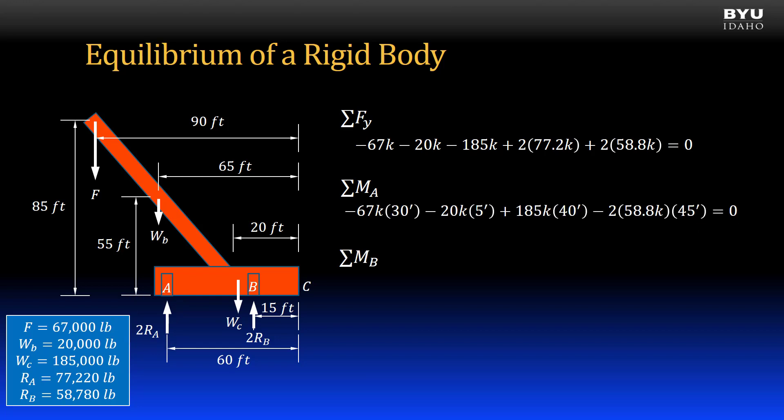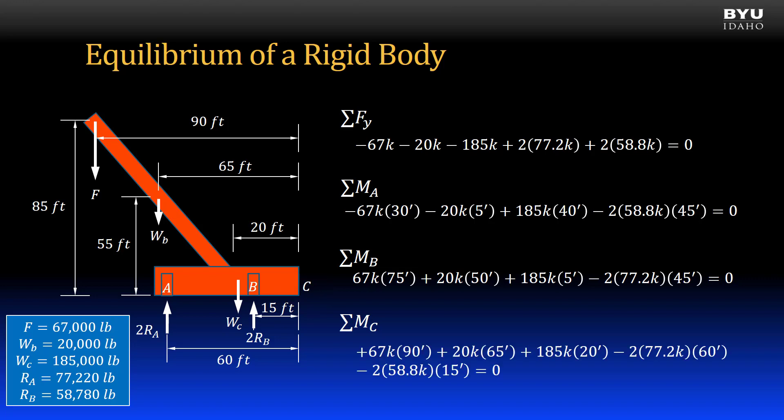If I sum moments instead about point B, the Rb reactions are not included, since their moment arms are zero. The sum of the remaining moments also equals zero. This will be true no matter what point I choose to sum moments about. Summing moments about point C, all the forces show up in my moment equation, and they all sum to zero. This is what I mean by all moments must sum to zero. It does not matter what point I sum moments about.